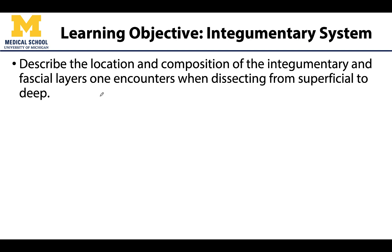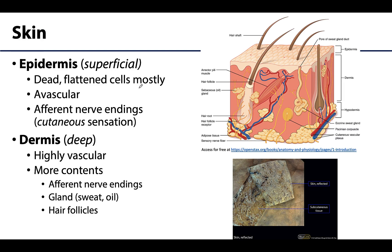The major goals for this video are to cover and understand where and of what the skin is composed, as well as the deeper fascial layers. You'll hear us say fascia all the time throughout anatomy, so we'll start understanding what that is. We're going to start superficial, or closer to the external environment, and continue deeper, away from the body surfaces towards the organs.